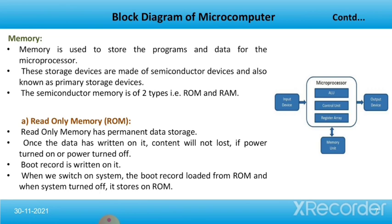Next is memory. Memory is used to store programs and data for the microprocessor. These storage devices are made of semiconductor devices and are also known as primary storage devices. Semiconductor memory is of two types: ROM and RAM. ROM stands for read-only memory, which has permanent data storage — once data is written, content will not be lost if power is turned on or off. The boot record is written on it, and when the system is switched on, the boot record is loaded from ROM, and when the system is turned off, it is stored back.